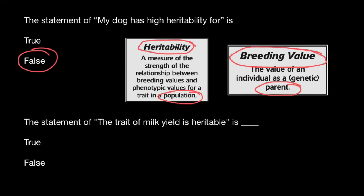Phenotypic value is just the appearance of an animal or plant — we can predict breeding value by the appearance of the animal. Phenotypic values and breeding values are usually strongly connected, but not always. Sometimes there is a weak connection because phenotype can be strongly affected by environment, and environment is not heritable.